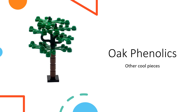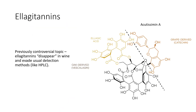Now we're moving into oak phenolics. I'm imagining oak phenolics like the other cool pieces in a Lego set — you can't build anything with them on their own, but they integrate into the landscape and make it much more interesting and rich. Oak tannins are also called ellagitannins. This was a previously controversial topic — I've heard phenolic chemists say these compounds just don't really exist, because these types of phenolics tend to disappear in the wine and evade usual detection methods like high-performance liquid chromatography. But now we've started to see them pop up and become trackable with new technologies.